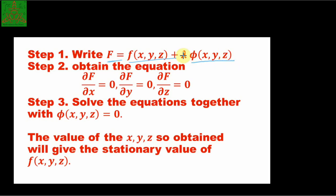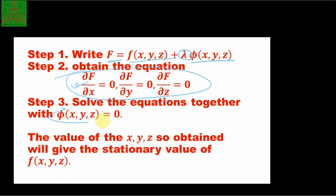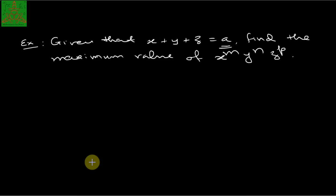The lambda is the parameter that you introduce. The next task is to obtain the equations del F by del x, del F by del y, del F by del z equal to 0. The third task is to solve these three equations together with phi of x, y, z equal to 0. The values of x, y, z you obtain are the stationary values for the function. Note that the Lagrange multiplier method cannot tell whether the stationary value gives a maximum or minimum.